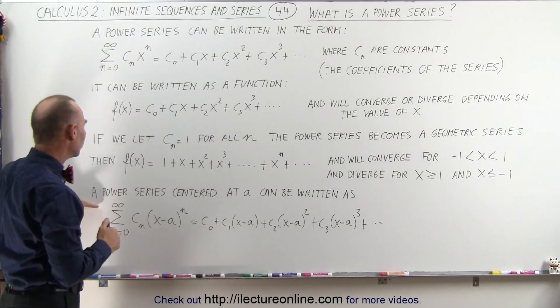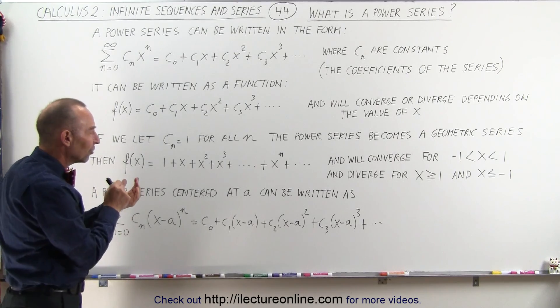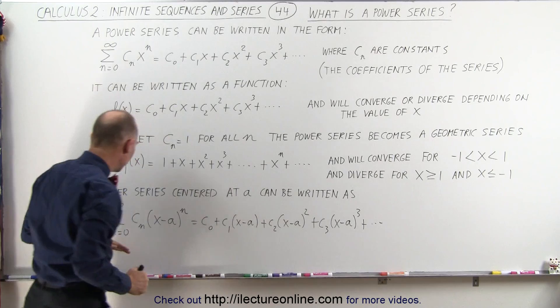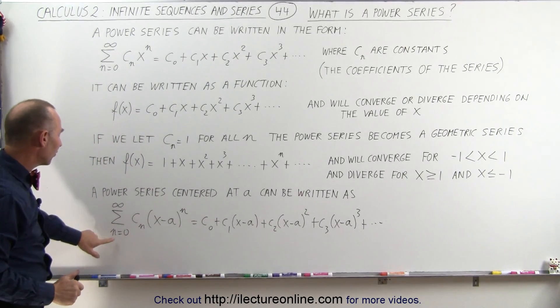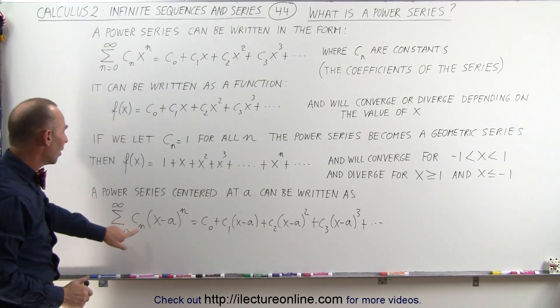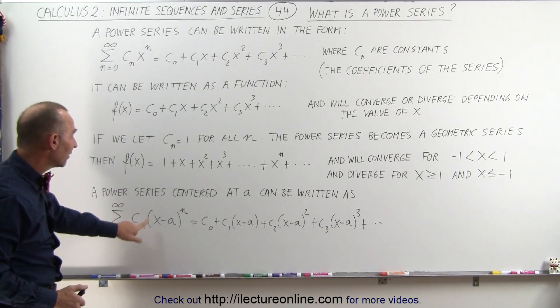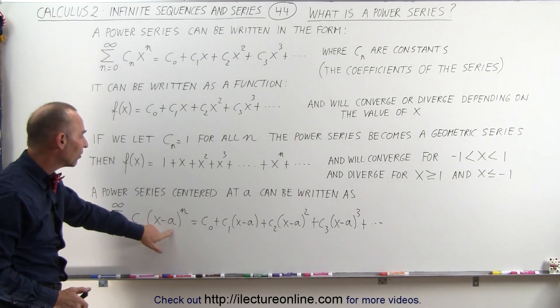Now, we can also take a power series like this and center it, instead of about the origin, we can center it at a, and it can be written as follows: the infinite sum from n equals 0 to infinity of c sub n, again, the constants, the coefficients of the series, times the quantity x minus a to the n.